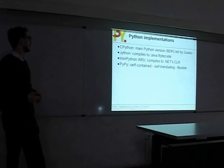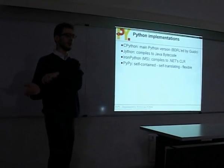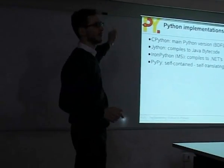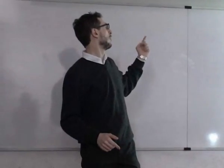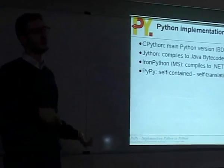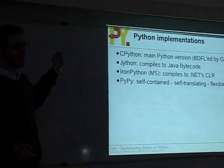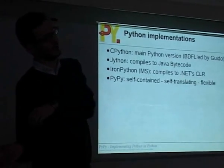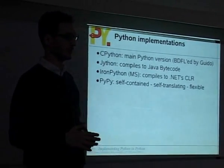Then we have PyPy, which tries to be a Python interpreter written in Python, together with a toolchain. Right now it can only run on top of CPython, and when we run all this PyPy code on top of CPython it's quite slow. So we need to translate this Python code to a low-level language like C. PyPy is not only the Python interpreter but also a translation machine — a later part of the talk covers how this translation process works.